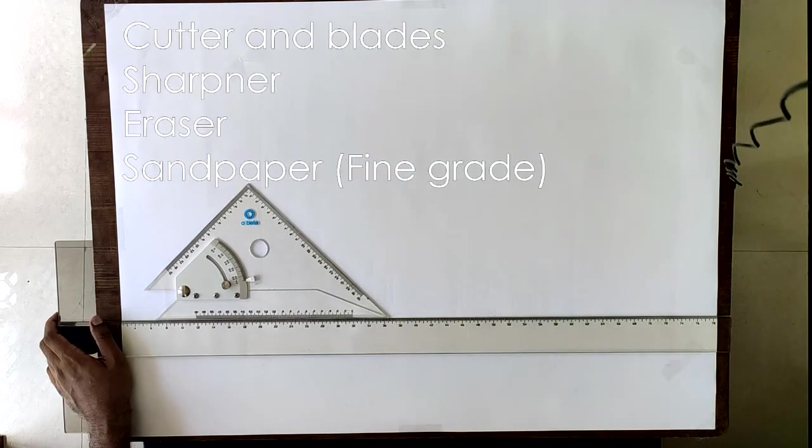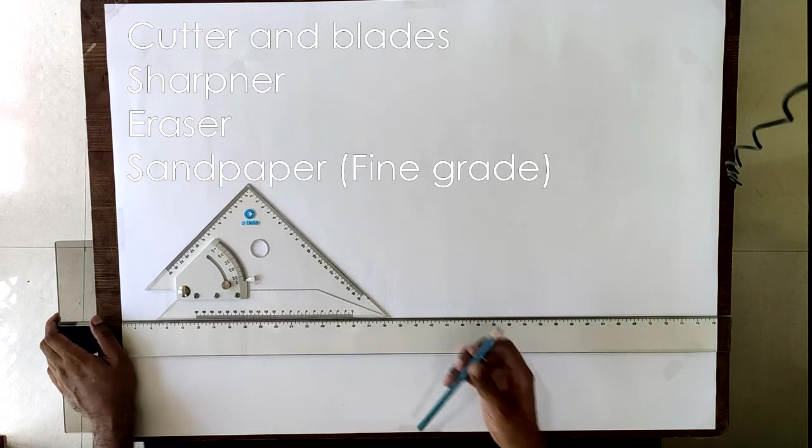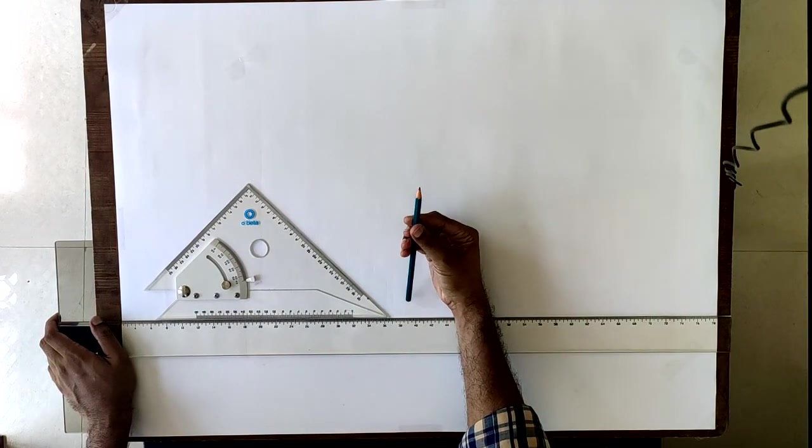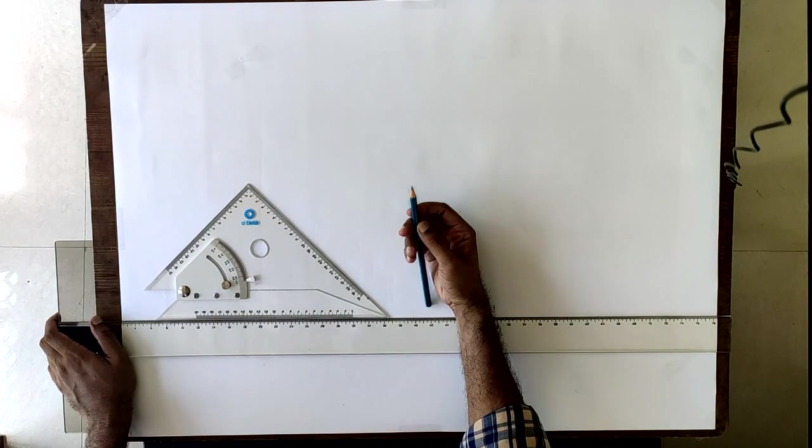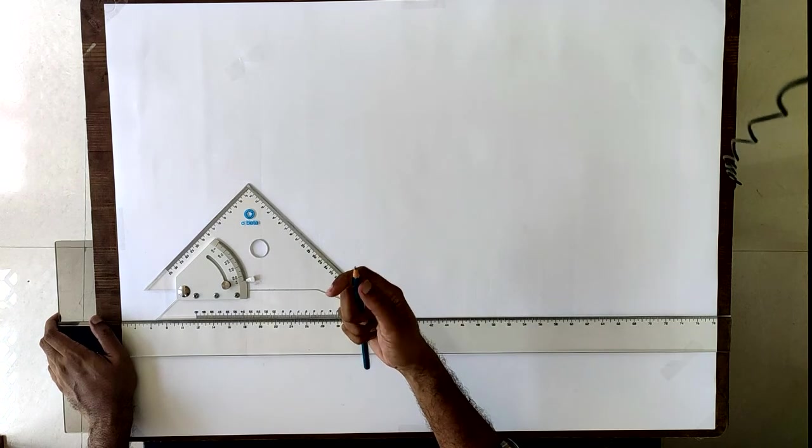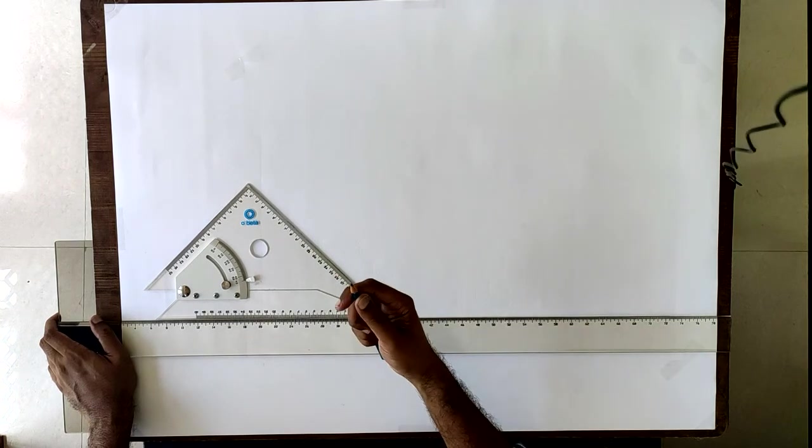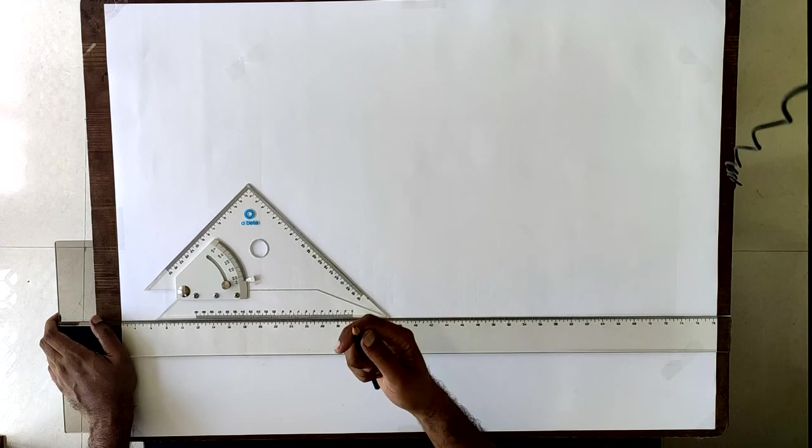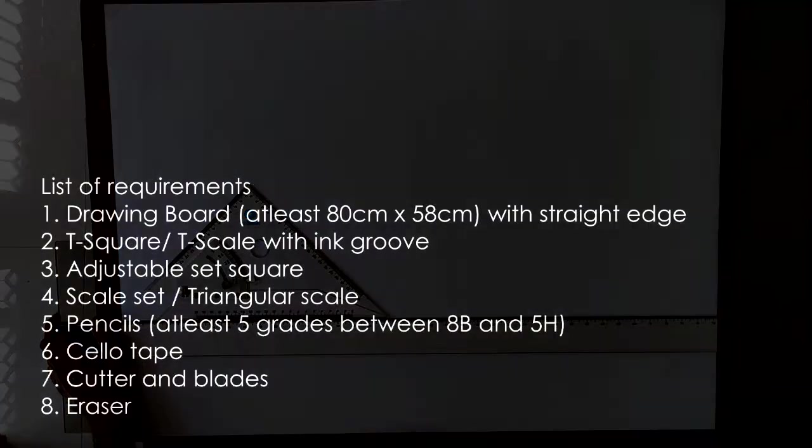Sandpaper is used to ensure that your pencils remain sharp at all times. Every time you draw a line the tip becomes blunt, and to ensure that the tip is sharp you have to use the sandpaper every time.